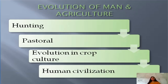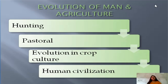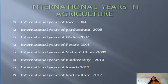We will now see the evolution of man and agriculture. It started with hunting, then pastoral activities, then evolution in crop production and human civilization. There are also some important international years used in agriculture.